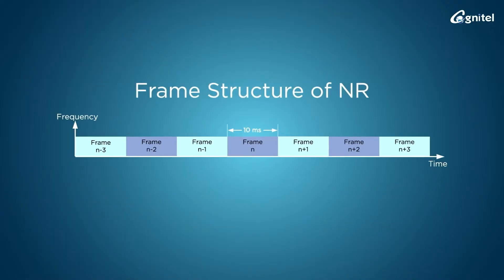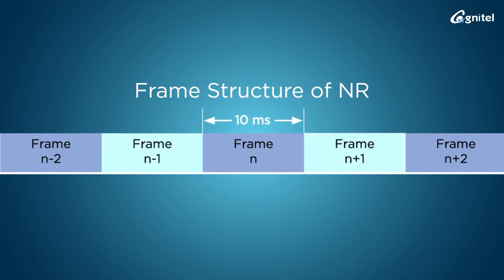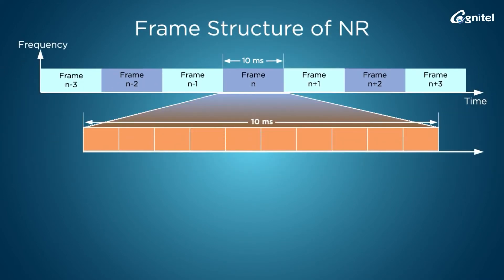The frame length of 5G NR is 10 milliseconds. Each frame is divided into 10 subframes numbered from zero to nine. Each subframe is of 1 millisecond duration and is divided into multiple slots. The number of slots varies with subcarrier spacing.